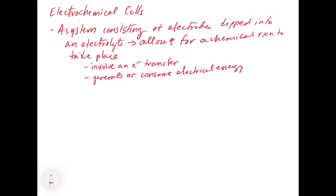Eventually the battery dies and the chemical energy is used up. So you have to plug your phone into the wall, and you take electrical energy from the wall to reverse that electrochemical cell reaction. The electrons are forced to go in the opposite direction, against the direction they would want to go. You basically put the chemical energy back in by transferring the electrical energy from the wall into chemical energy in the battery.